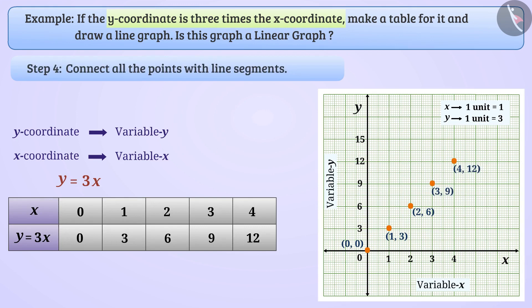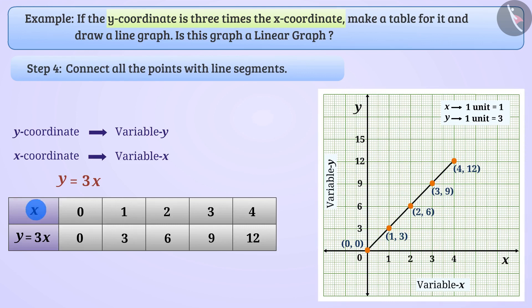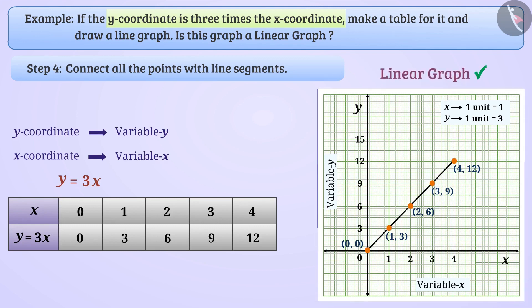Step 4: Now we will connect all the points with line segments. Thus, we have shown various values of variable x as a graph. We see that all the line segments obtained are part of the same line, so we can say that this is a linear graph.